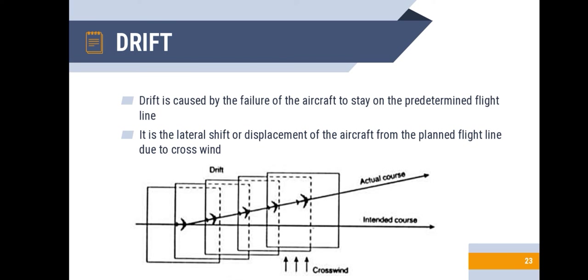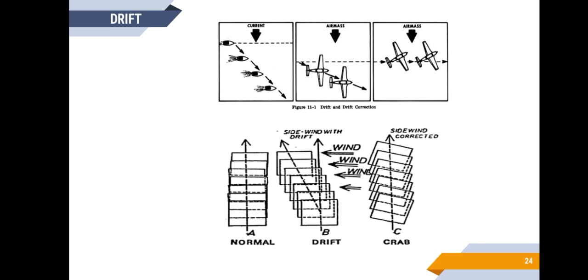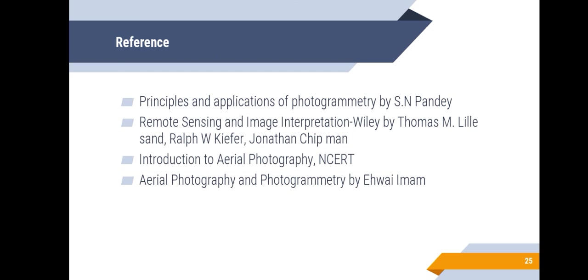Drift is another anomaly. It is the lateral shift or displacement of the aircraft from the planned flight line caused by the action of wind or navigation errors. If the aircraft drifts to one side of the flight line, loss of some sidelap would be observed on the side opposite to the direction of drift. Drifting from the predetermined flight line is the most common cause of serious gapping between adjacent flight lines. Gapping may also be due to a poor flight line map even though the pilot keeps the aircraft on the flight line as drawn on the map; in such cases, reflights may be required. Usually, crabbing occurs when the flight drifts from the predetermined flight line.